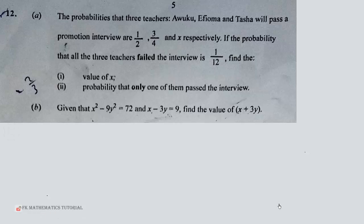So let's go. The probability that Awuku passes is 1 over 2, so probability that Awuku will not pass is 1 minus 1 over 2, which is still 1 over 2.